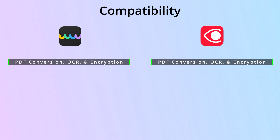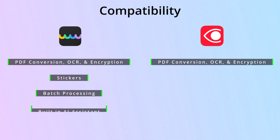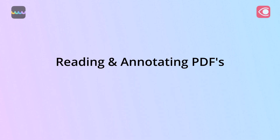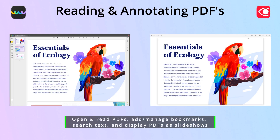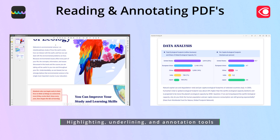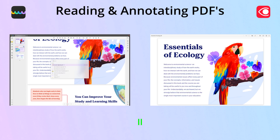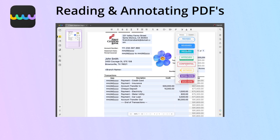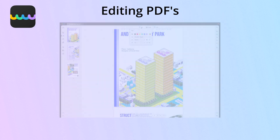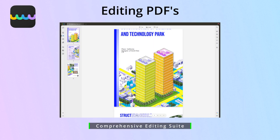However, UPDF edges out with impressive extras like stickers, batch processing, a built-in AI assistant, and many other useful features. When it comes to reading PDFs, both tools allow you to open and read PDFs, add and manage bookmarks, search text, and display PDFs as slideshows. Highlighting, underlining, and other annotation tools are also available in both. However, UPDF sweetens the deal with additional annotation features like stickers and attaching files.